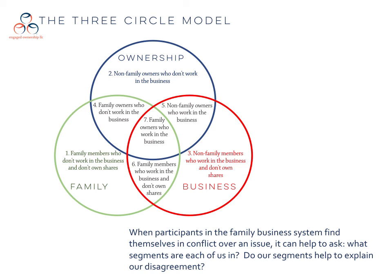One of the lessons to take away from the Three Circle Model is that it can tell us a lot about family business conflict. In particular, when individuals in the system are not getting along or there's a major issue, it can be valuable to stop and say: what segments are these individuals in, and how might their basic concerns be affecting their perspective on this issue? In other words, do the segments help to explain the disagreement?